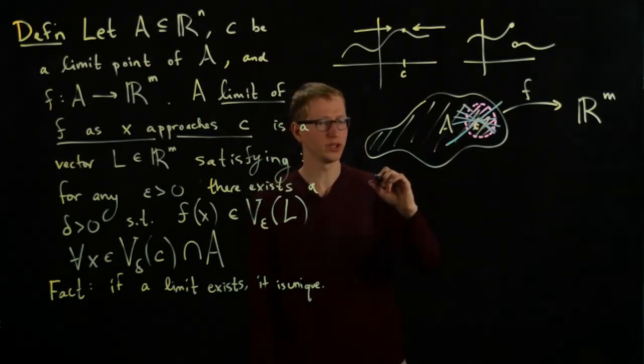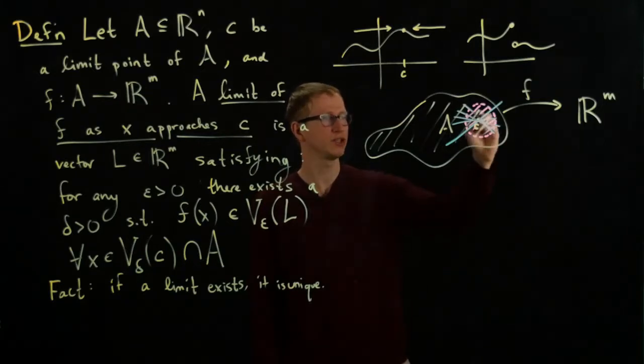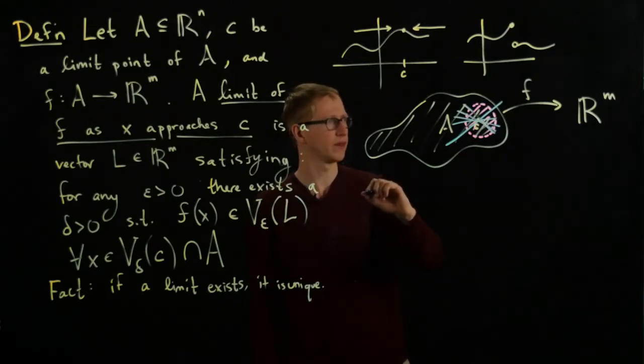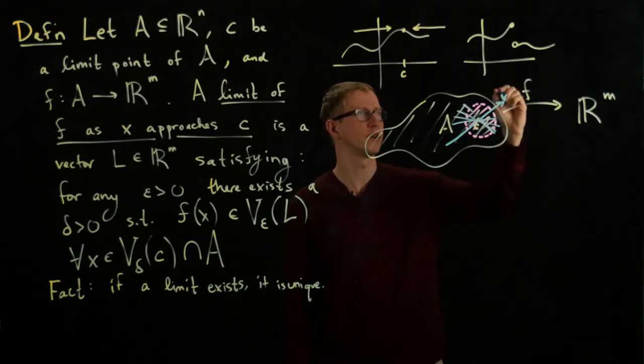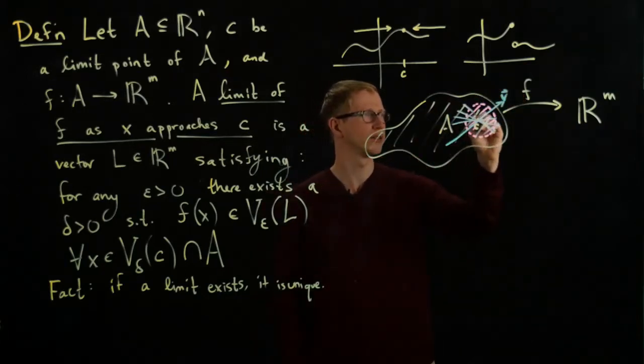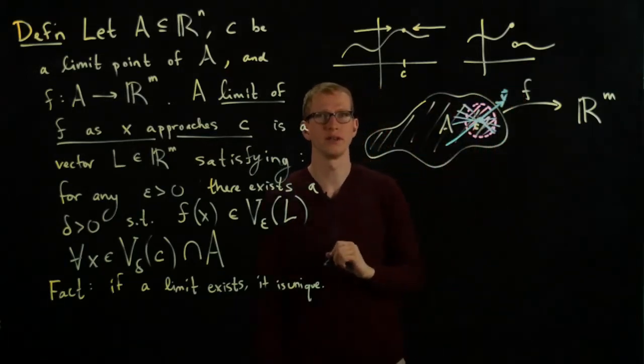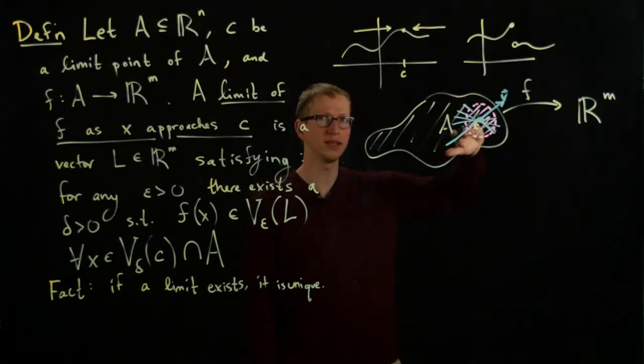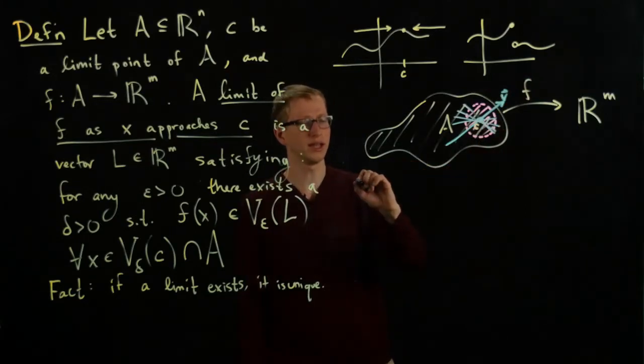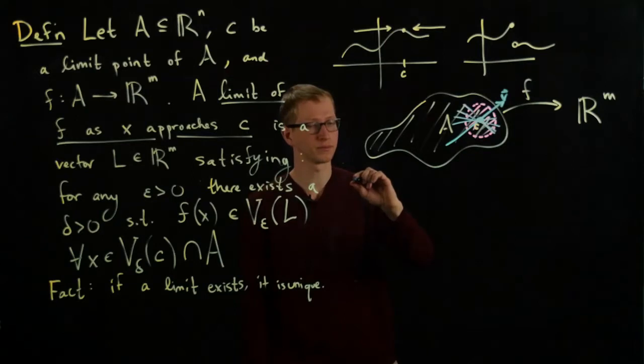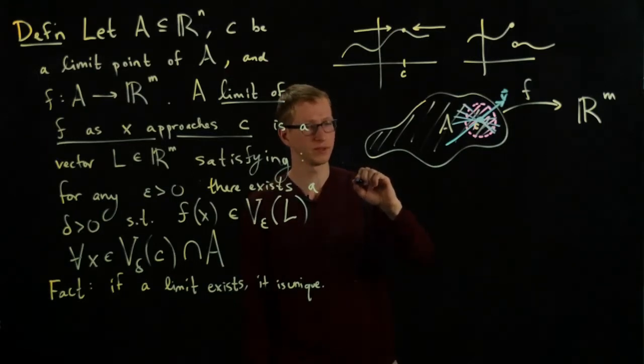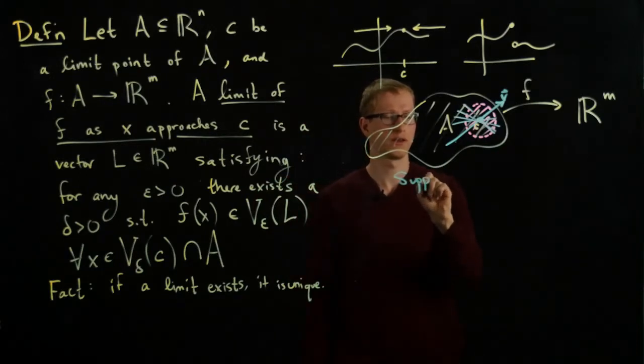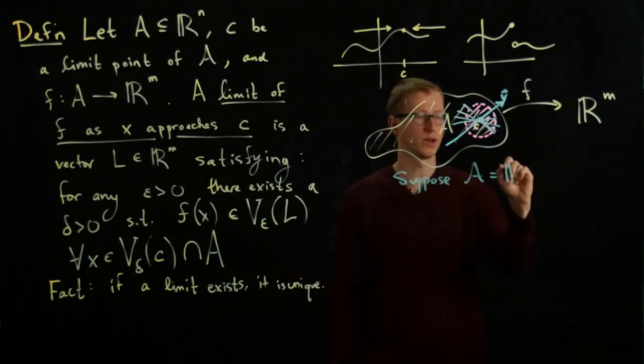So we could imagine for any such line, so for instance, each of these lines are determined uniquely by some vector V. Let's see if we had a vector V at the start of the point C, we can look at the line that goes through C along this vector V. Such a line is described by a function as well.